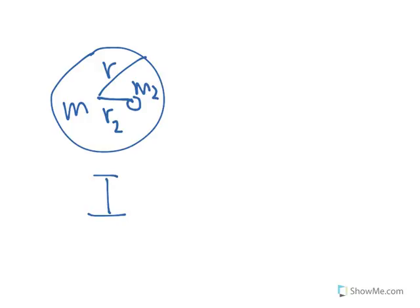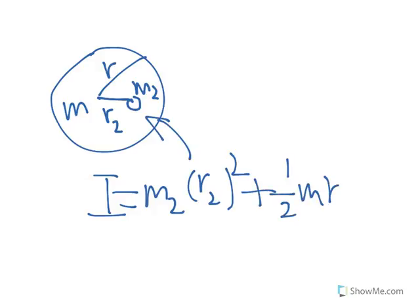Still, when we solve it out, the moment of inertia is just going to be m2 r2 squared, and that's for the rock. And then plus one-half m r squared. And that's the disk.